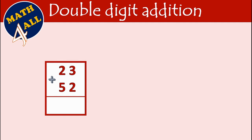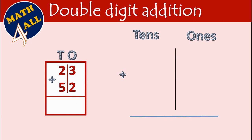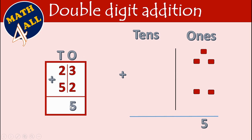Now let's learn how to solve double digit addition. First, you have to cut between places — cut between tens and ones — and write the places. Then start from the ones place. Three plus two: count after the bigger number, after three: four, five. So three plus two equals five. Write five in the ones place.